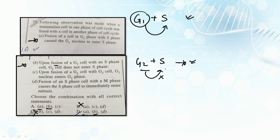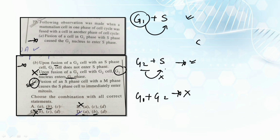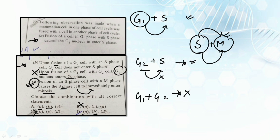Observation three: upon fusion of G1 with G2, the G1 enters the G2 phase — this is incorrect, because G1 and G2 fusion has no impact on each other. Observation four: fusion of S with M phase immediately causes the S phase to enter mitosis — this is also correct, because when S phase and M phase are mixed, the S phase cell enters the mitotic phase. Therefore options A, B, and D are correct, making the answer option D.